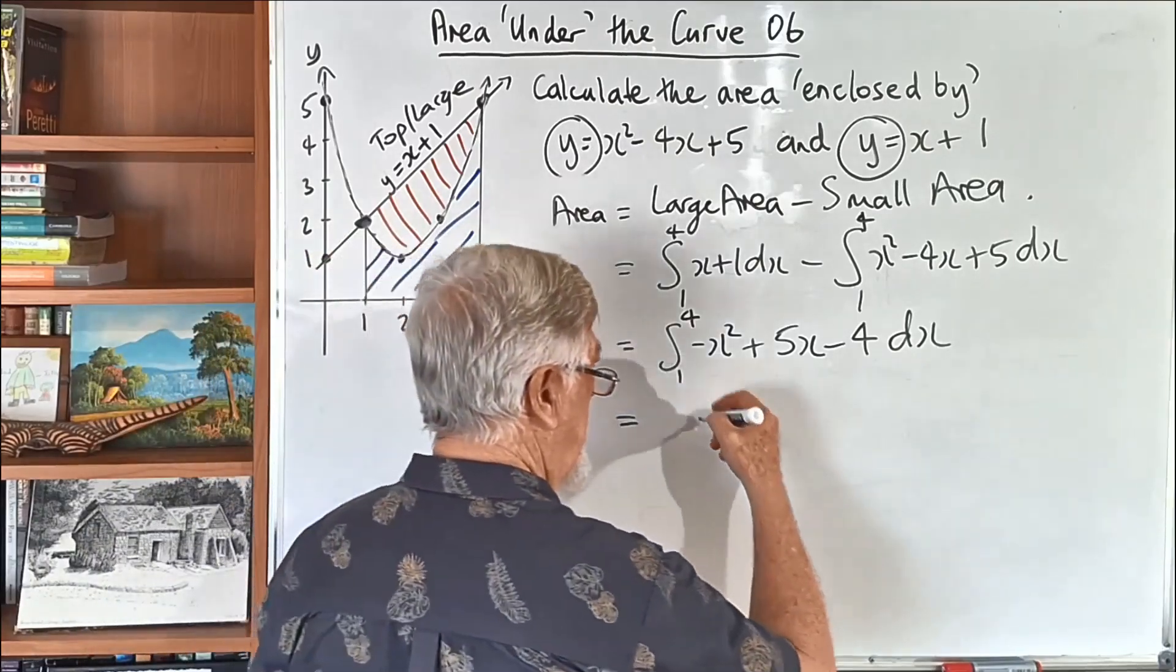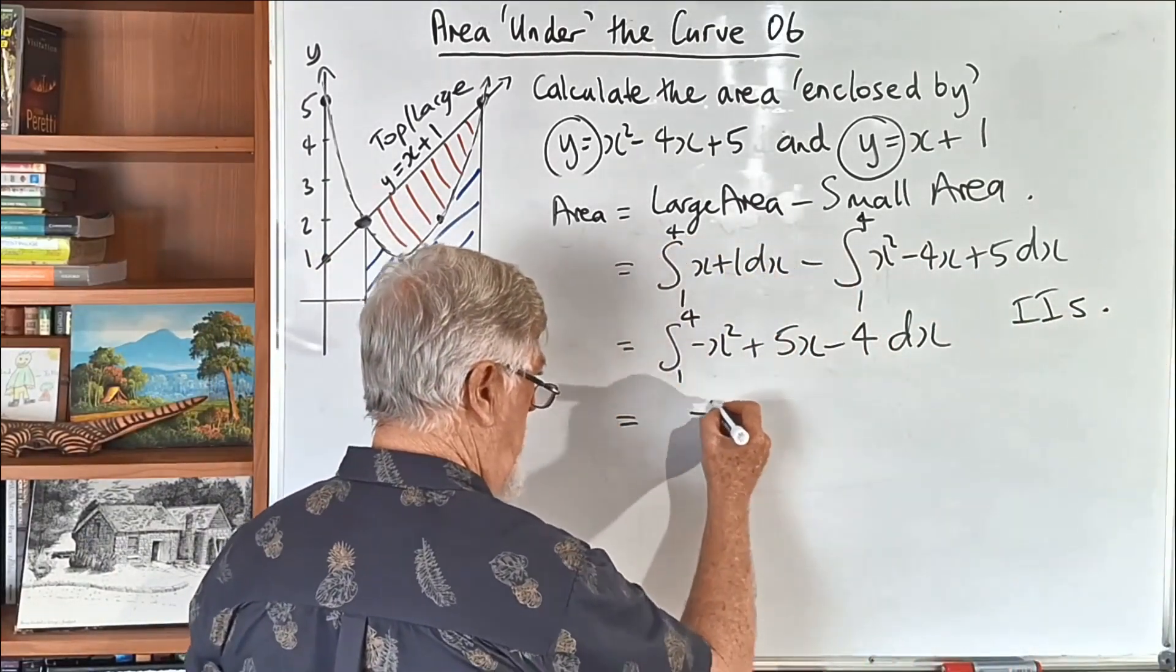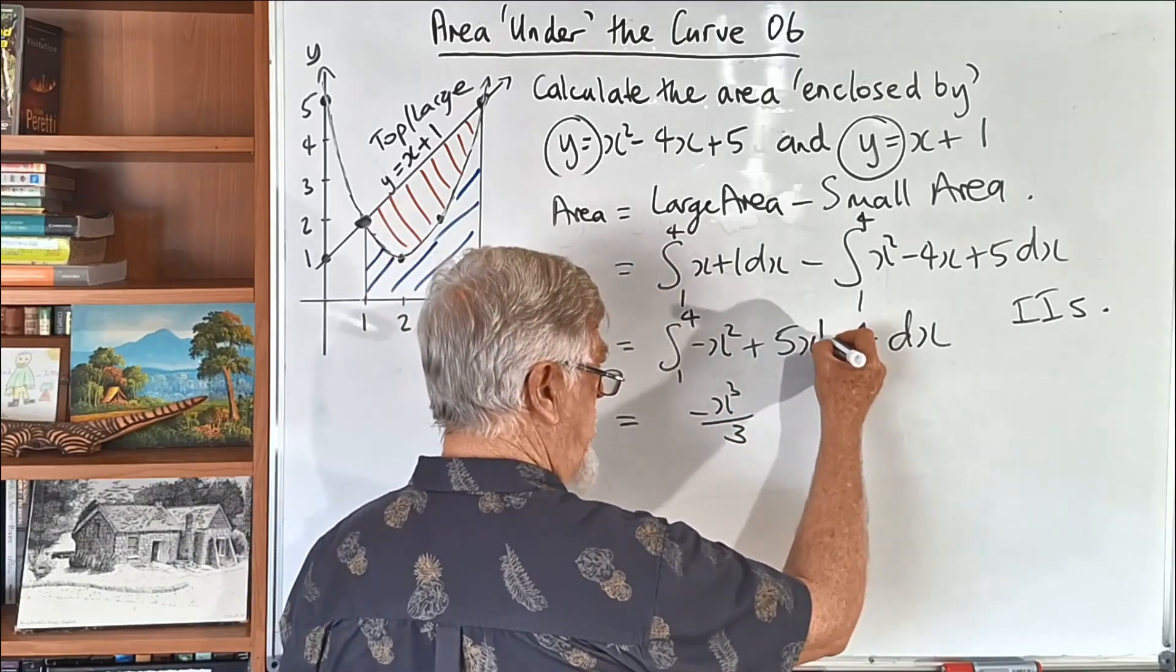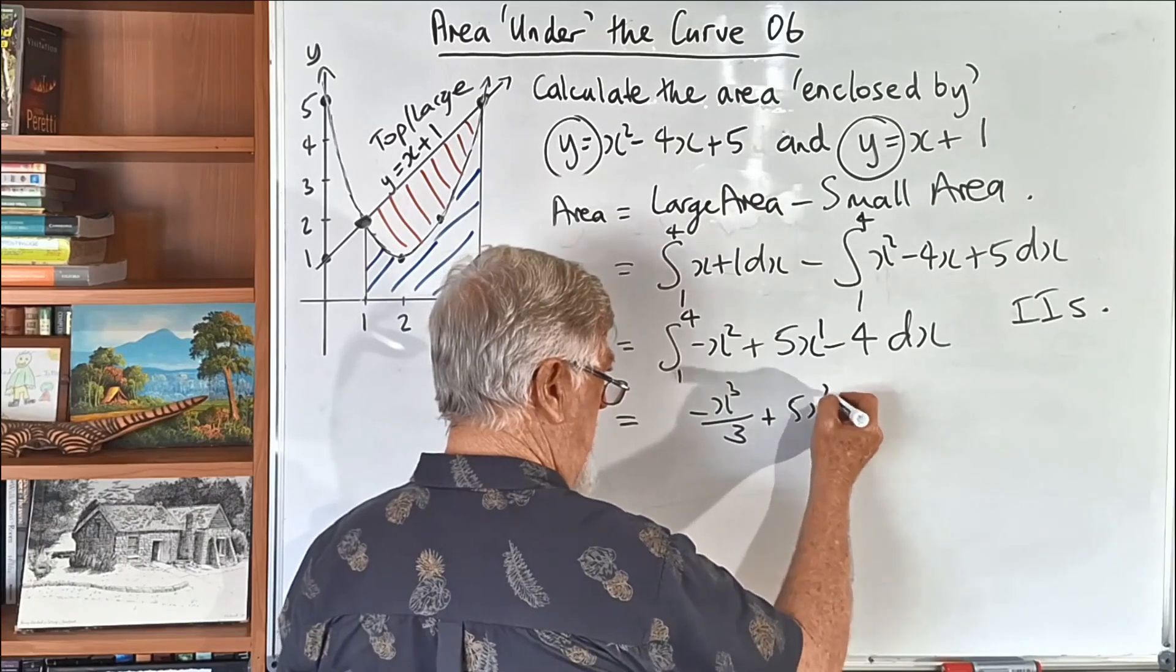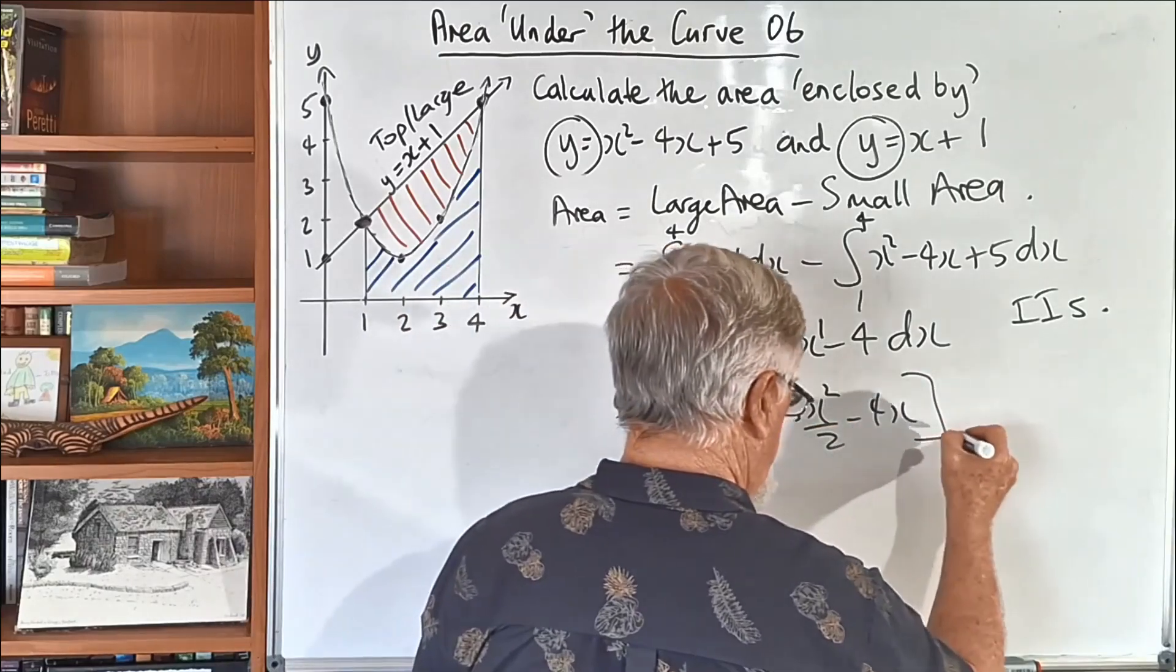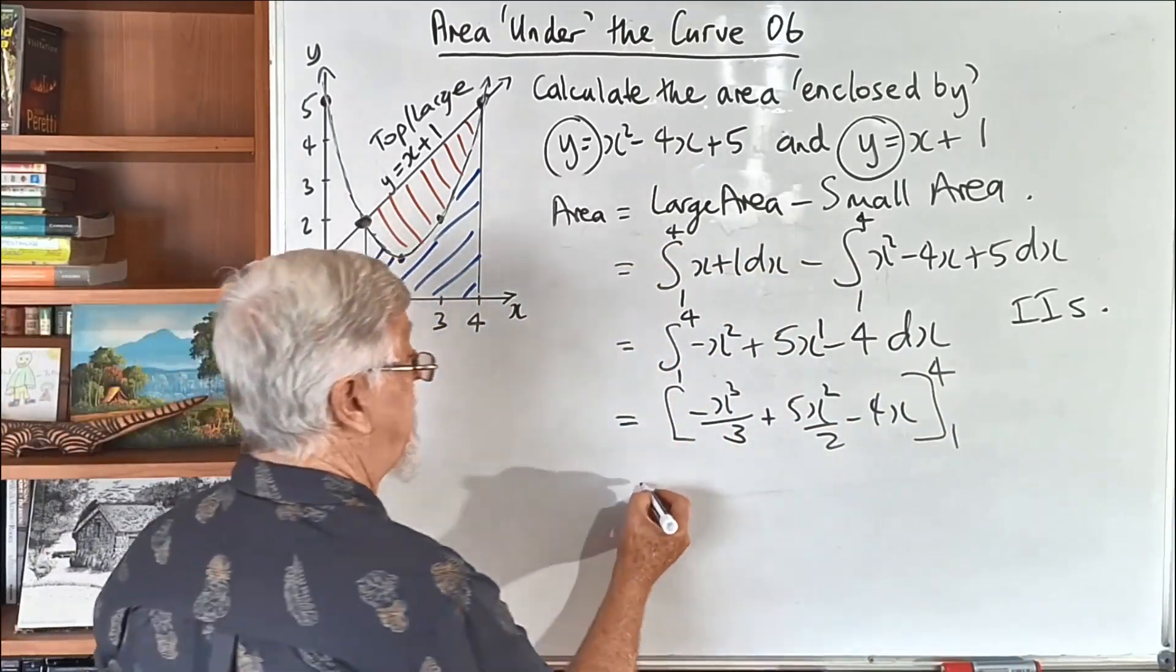How do we integrate? Talk about the ii's. So, you increase the power to a 3, and divide by 3. And then this one, it's a power of 1, so I go 5x squared on 2, and that's a 4x, and I don't have to write plus c, and I'm still going to substitute 1 to 4. Let's have a look what happens with those.